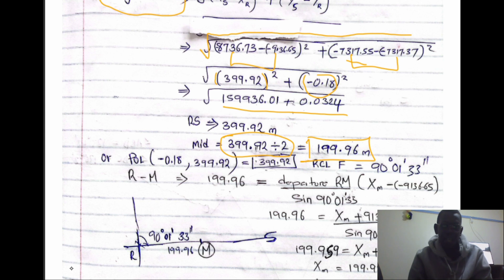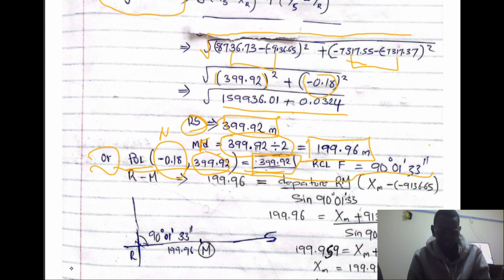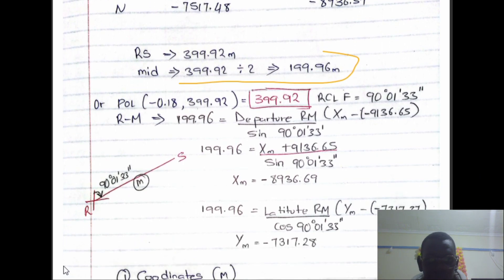Alternatively, I can use this formula — by taking the difference in the eastings and the difference in the northings — and I'll get the same answer. The distance RS is three hundred and ninety-nine point nine two. By using the recall F function on the calculator, I now get the bearing. We then divide the distance by two to get the distance from R to M as provided in the equation.